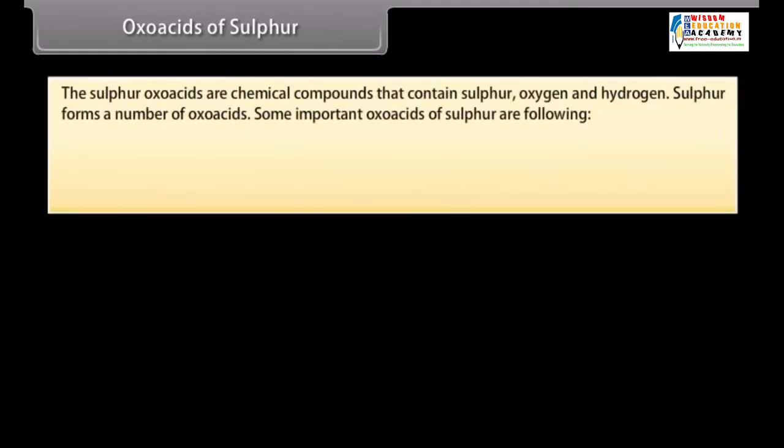Oxoacids of Sulphur. The Sulphur Oxoacids are chemical compounds that contain Sulphur, Oxygen and Hydrogen. Sulphur forms a number of oxoacids. Some important oxoacids of Sulphur are the following.